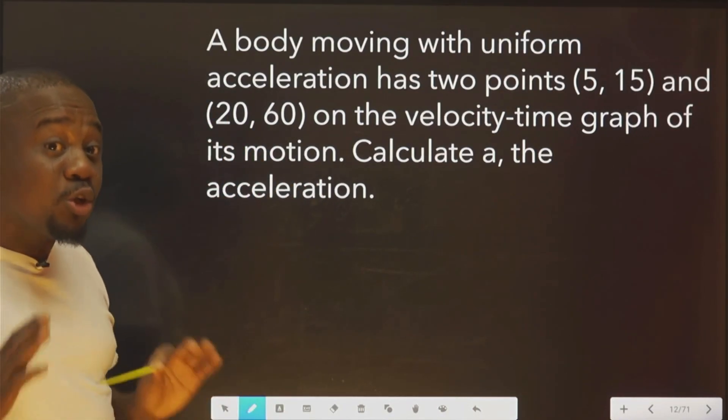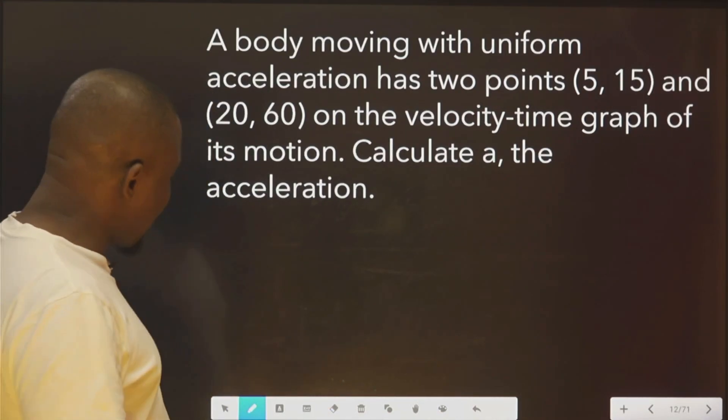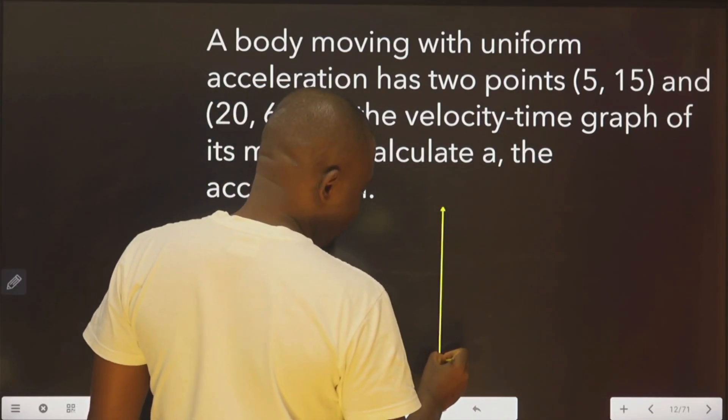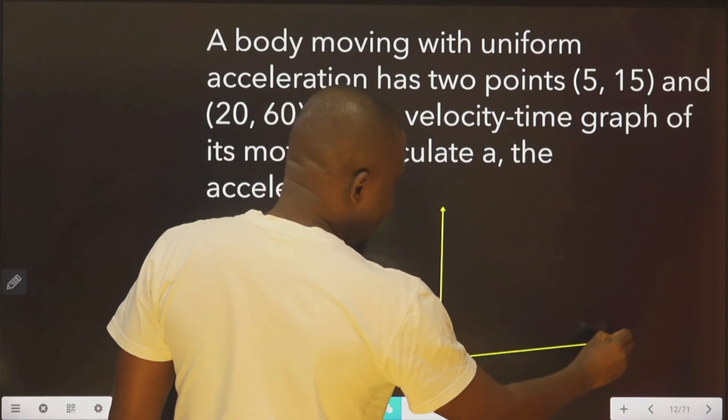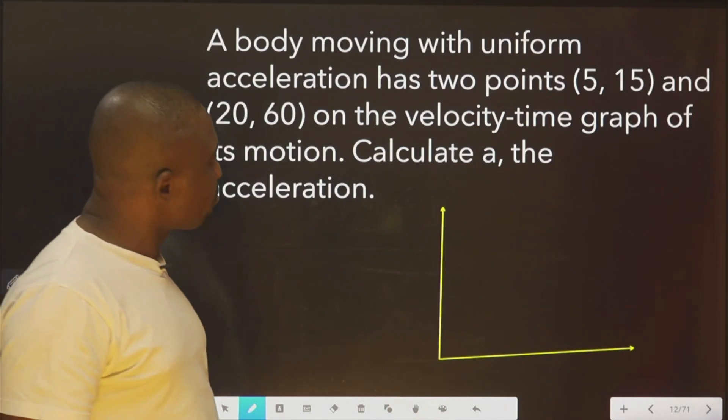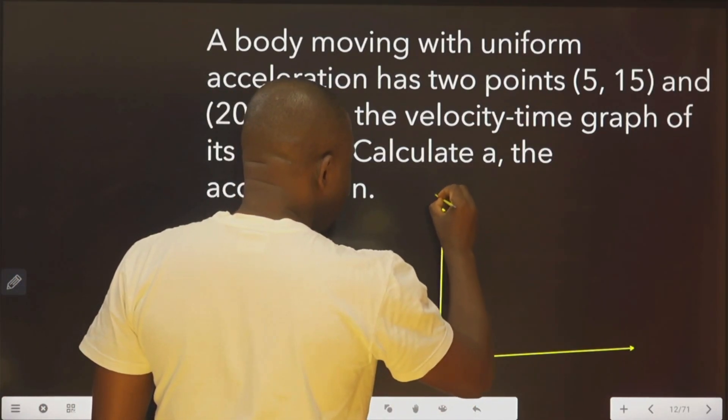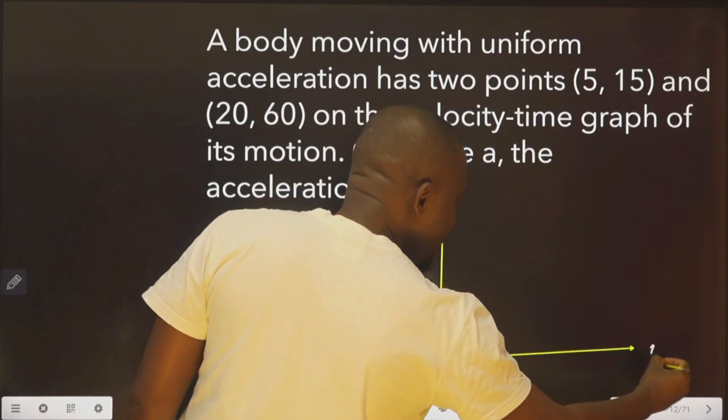Now, the first thing you need to do when you see this kind of question is to draw the graph. Let's do that. We're going to take a line from here. Another line. Then we take some values, rough values. You agree with me? This is the velocity line. This is the time line.